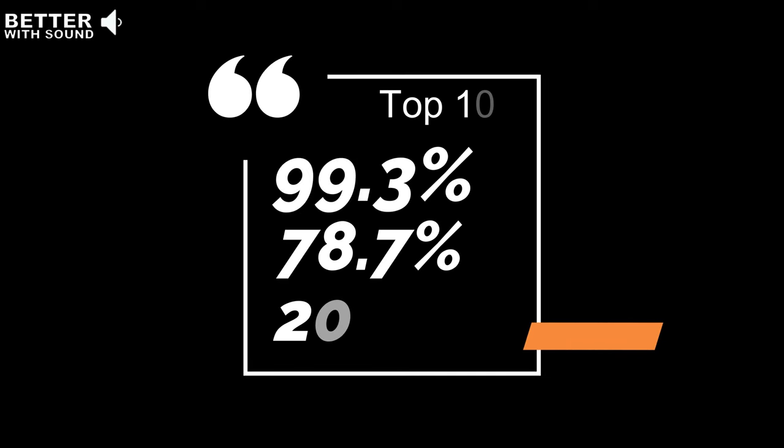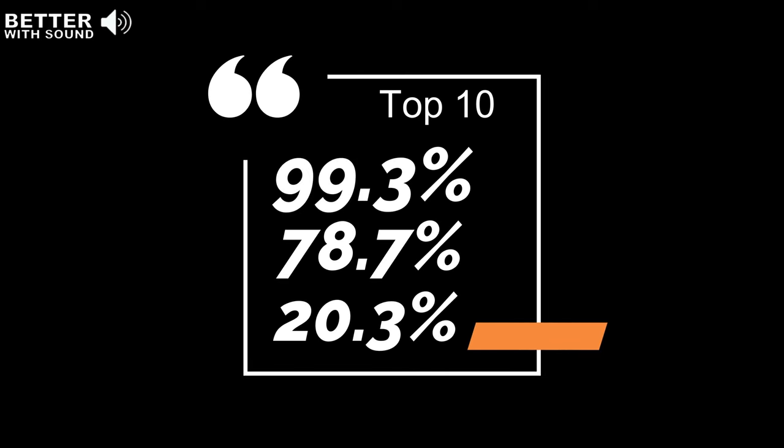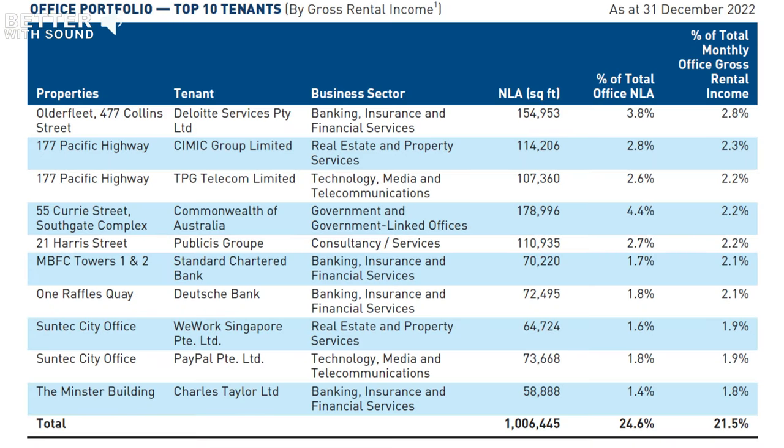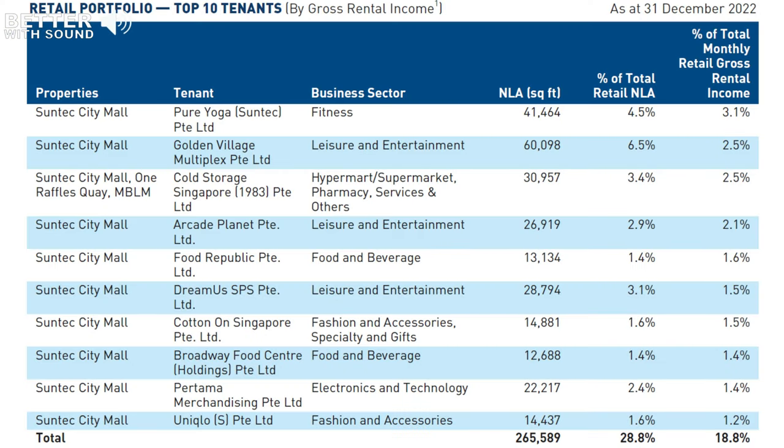Data centers came in at 99.3% and 78.7%, while CRCT is at 20.3%. How about SunTec? I got the information from its annual report since there wasn't such a breakdown in its quarterly results. SunTec splits its office and retail portfolios: the top ten tenants in its office portfolio contributed 21.5%, and the top ten tenants in its retail portfolio contributed 18.8%.